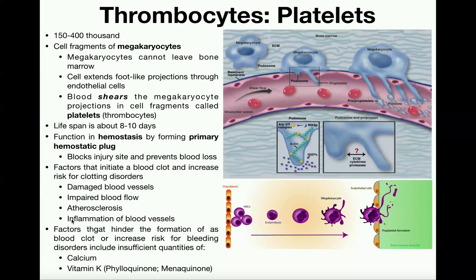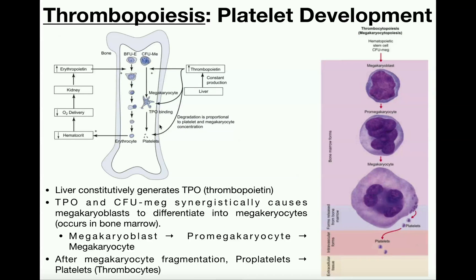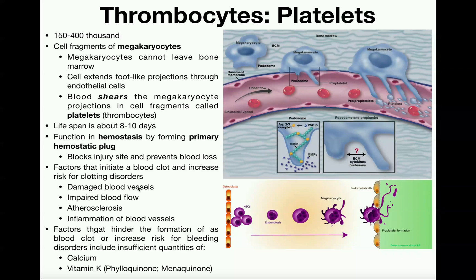There are several factors that initiate a blood clot and increase risk for clotting disorders. First, if you have any inflammation — inflammation in general is going to cause damage to blood vessels. When you have damaged blood vessels, the damaged endothelial cells are going to release chemicals that activate platelets. Any time you unnecessarily activate a platelet you increase the risk of a blood clot forming, and that can actually break loose and cause a stroke.